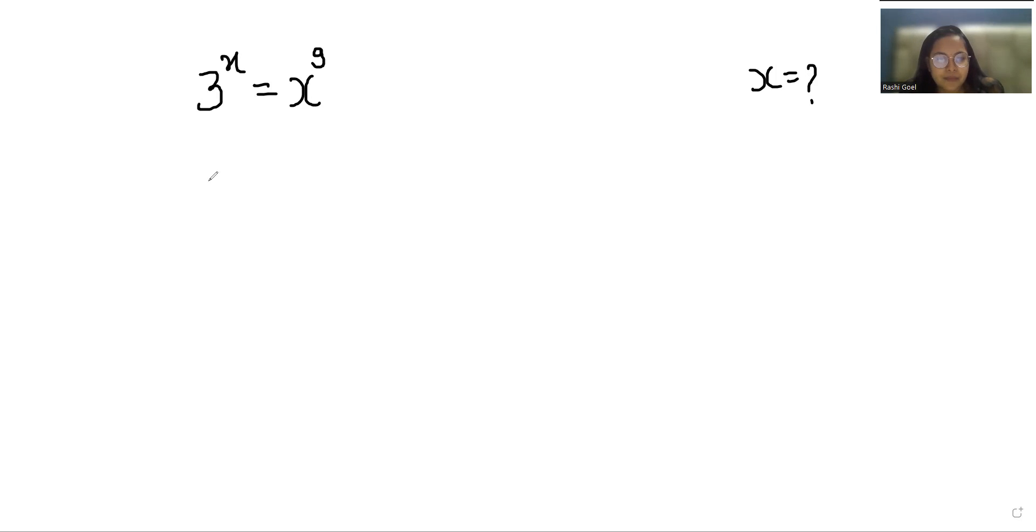So 3 power x equals x power 9. Now I'm going to multiply with power 1 by x both sides, so 3 power x times power 1 by x equals x power 9 by x. Now I'm going to multiply with power 1 by 9 both sides.